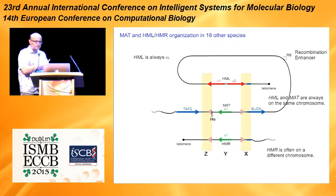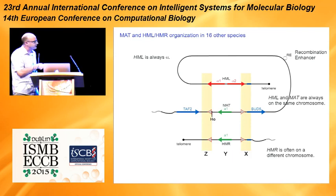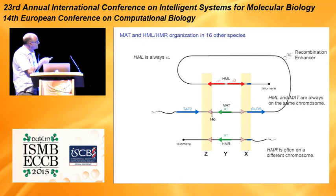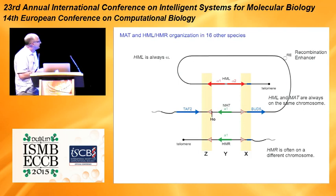A few years ago we looked at species closely related to Saccharomyces cerevisiae to ask how they do the same thing. They all have this structure with triplicated regions. The Z and X regions provide guides to allow the copying process to happen: after the double strand break, DNA invasion occurs first at the Z region, then copies through the Y region (which is different between a and alpha), then returns in the X region.